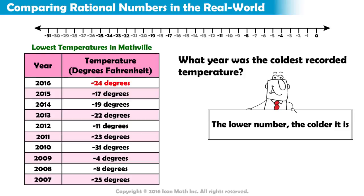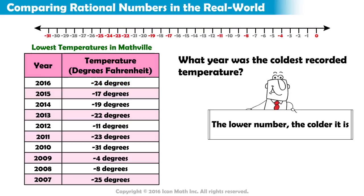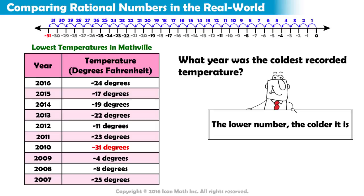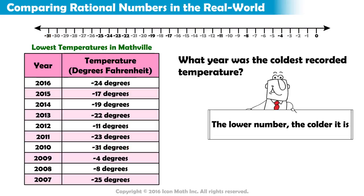Negative 24 is 24 places to the left of 0. Do you see any number even further away? Yes. Negative 31 is 31 places to the left of 0. Among the recorded temperatures in the table, do you see any other temperature that is further away from 0?